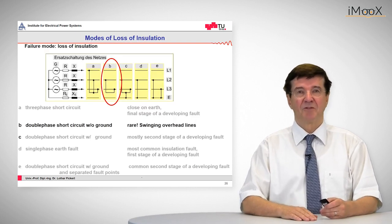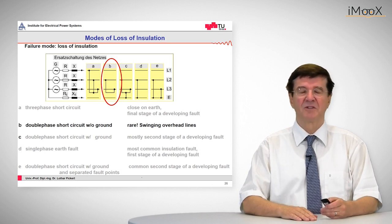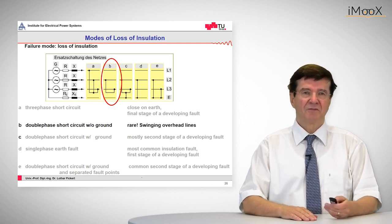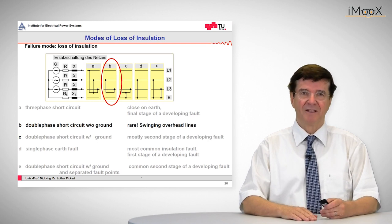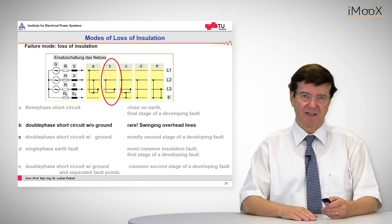The next type of fault is the phase-to-phase fault without involvement of ground. So this is a very rare fault, by the way. Maybe it is caused by swinging overhead lines.